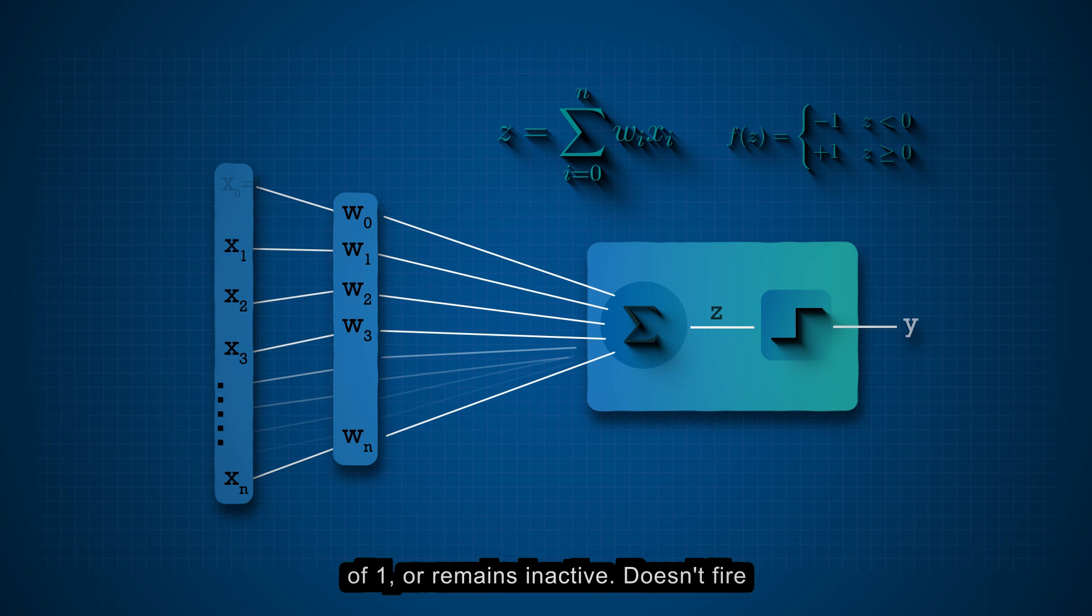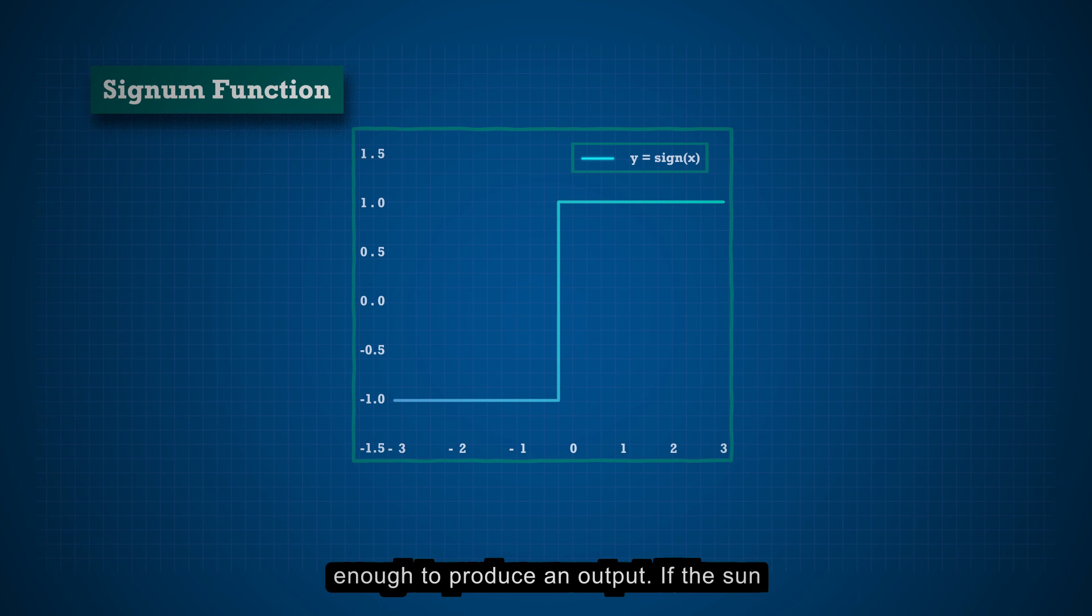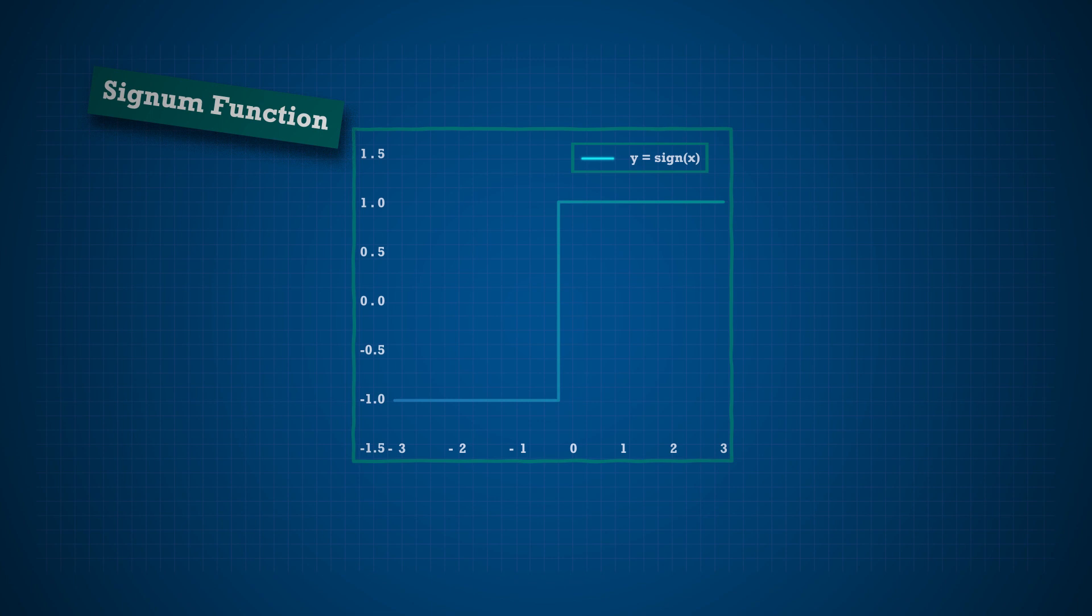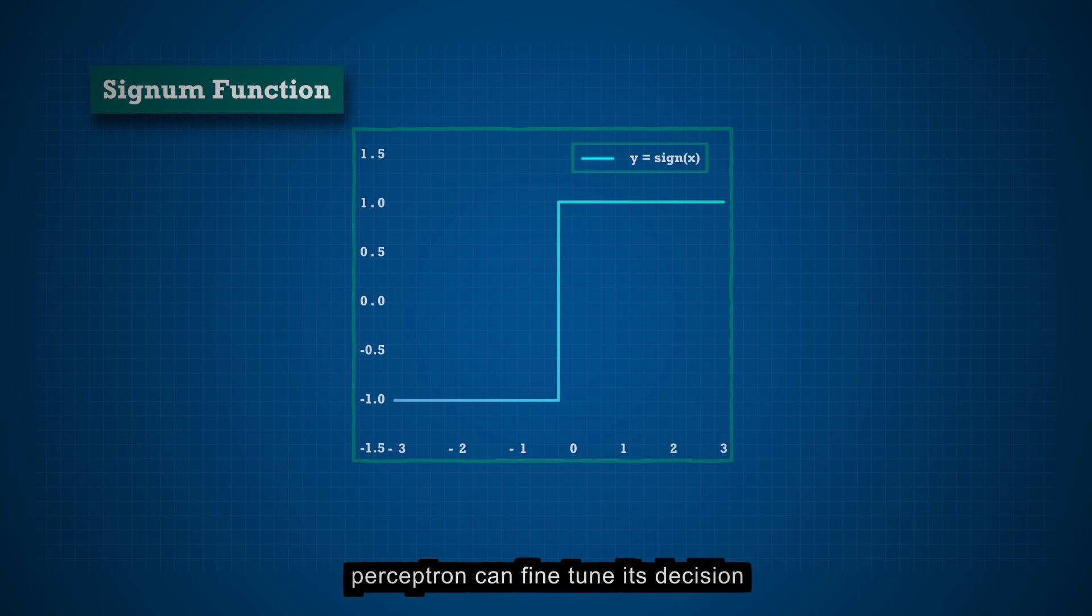You can think of the signum function as a threshold that the perceptron uses to decide whether the sum of weighted inputs is significant enough to produce an output. If the sum crosses the threshold, 0, the perceptron fires, otherwise, it stays silent. This simple decision-making ability is the heart of the perceptron's power, as it allows it to learn from data and make predictions. By adjusting the weights during the training process, the perceptron can fine-tune its decision boundary, becoming more accurate in classifying different inputs.